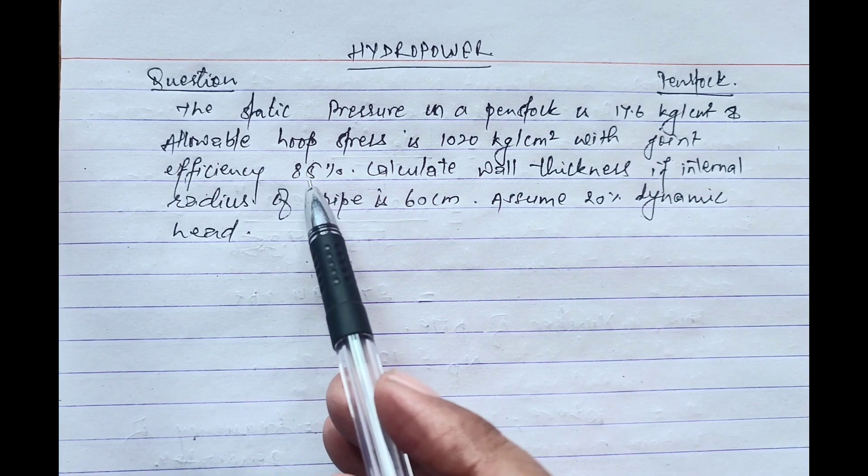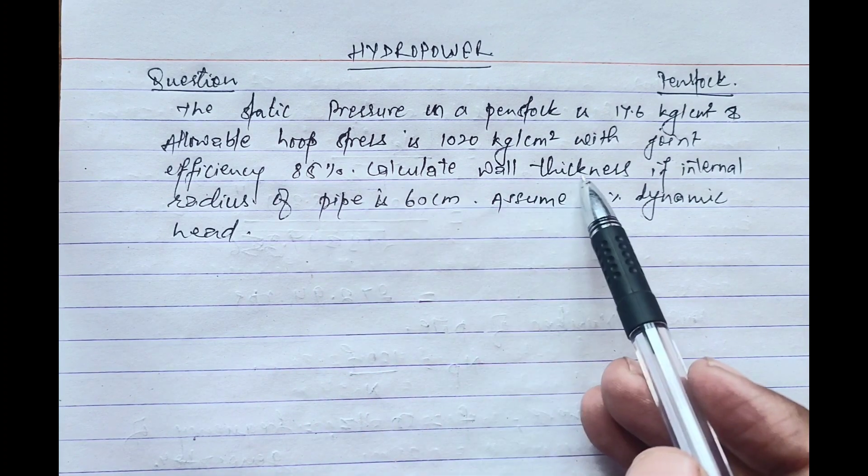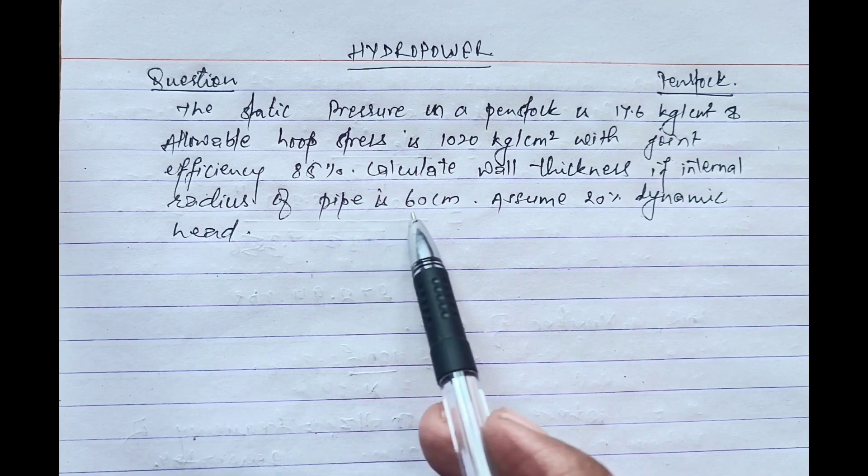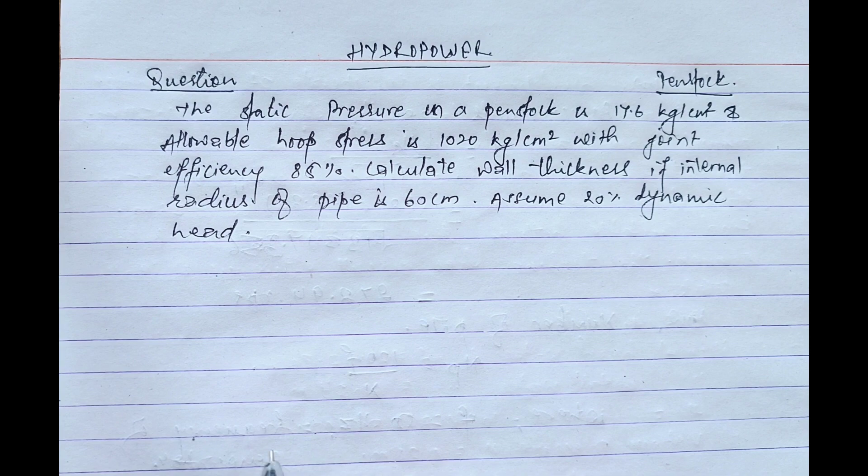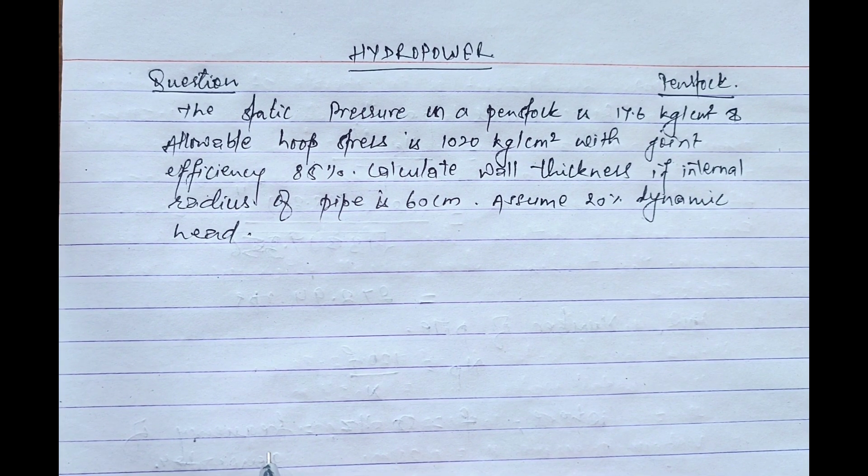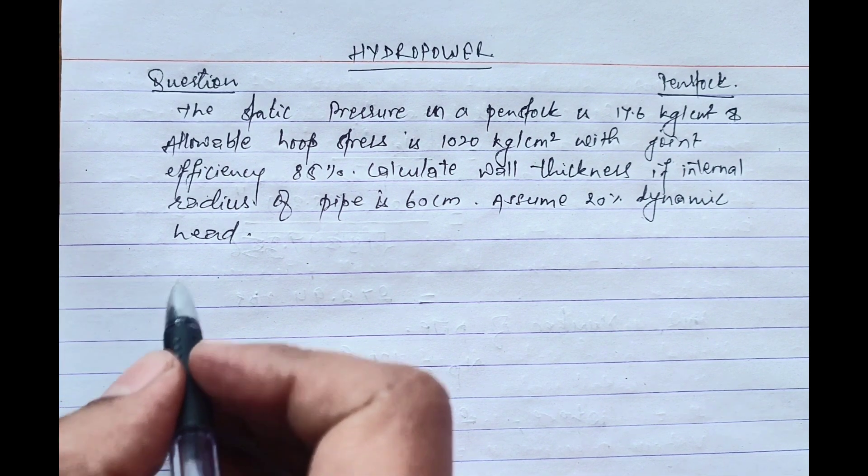Joint efficiency is 85 percent. Calculate wall thickness if internal radius of pipe is 60 cm. Assume 20 percent dynamic head. So in this question we have to calculate the wall thickness of penstock. Let's start the solution.